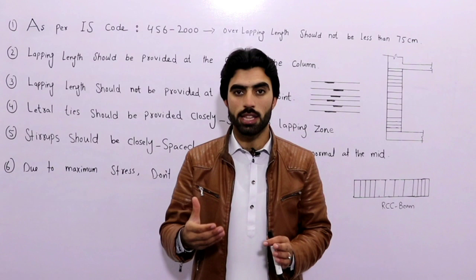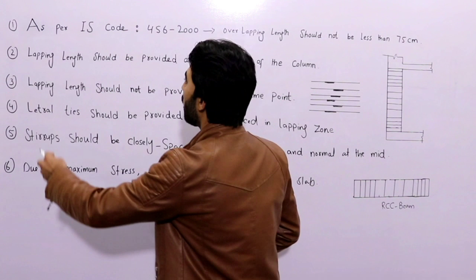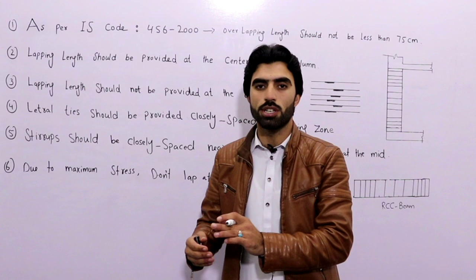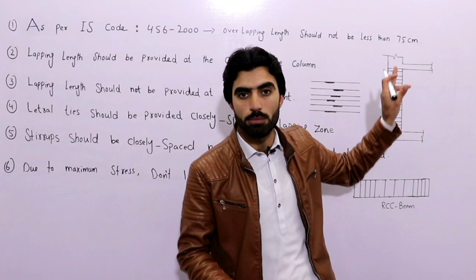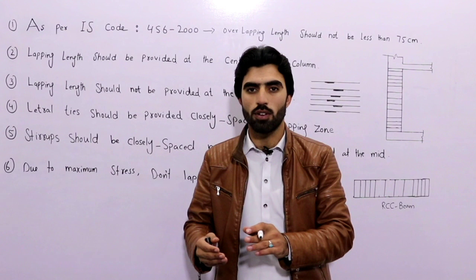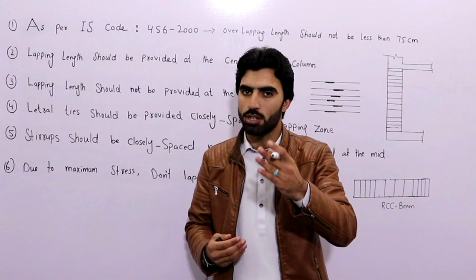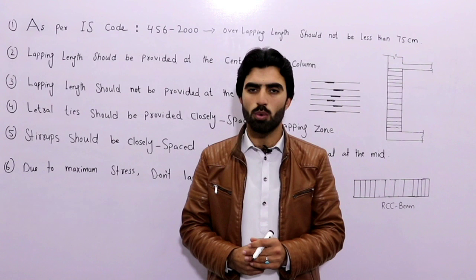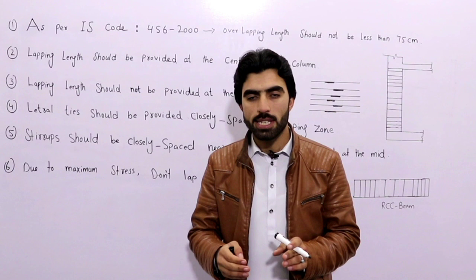The first point is about lapping length, and the reference is IS 456-2000. As per IS 456-2000, the lapping length should not be less than 75 cm. Many civil engineers and students provide lapping length less than 75 cm, which is incorrect. We have different formulas for lapping length specifically for beam, column, and slab — it depends on your structure — but it should not be less than 75 cm. A link for more detail is in the description.